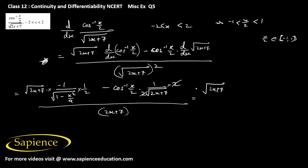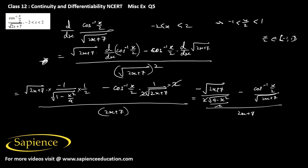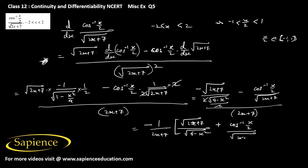Simplifying: we can write square root of (2x+7) times minus 1/2 into 1 over square root of (4 minus x²) — since 4 minus x² divided by 2 means the 2 and 2 cancel — then minus cos inverse (x/2) divided by square root of (2x+7), all divided by (2x+7). This gives the final result: minus 1 over (2x+7) times square root of (2x+7) over square root of (4 minus x²), plus cos inverse (x/2) divided by square root of (2x+7). This is the required derivative of the function with respect to x.